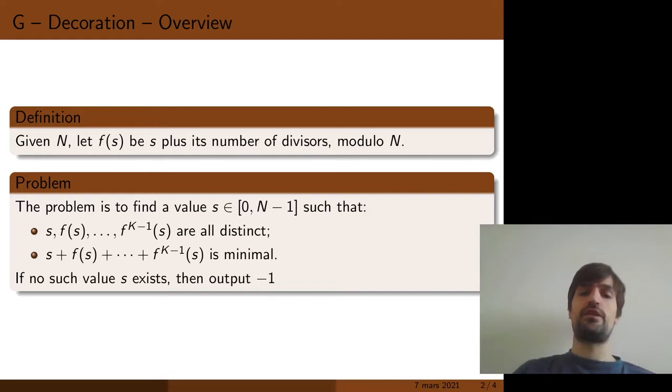The problem we are considering is to find a value s between 0 and n-1, such that first, all the iterated images of s by f are all distinct, and second, their sum is minimal. If no such value s exists, then your program should detect that situation and output n-1.